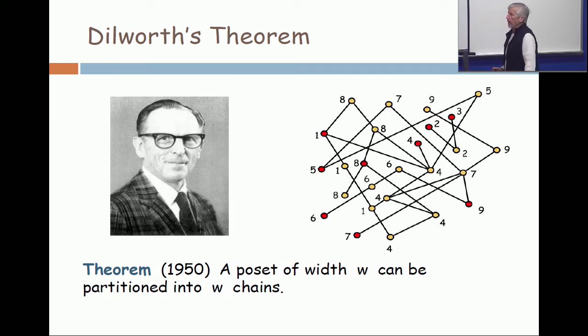Dilworth's theorem is that whatever the width of a poset is, it can be partitioned into that number of chains. Now, we gave a proof of that in class last time, but that proof is an existence proof.